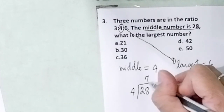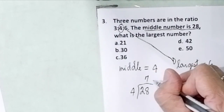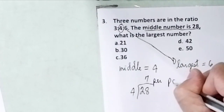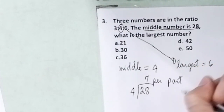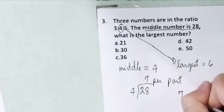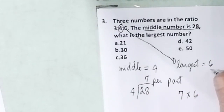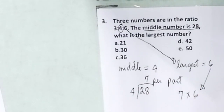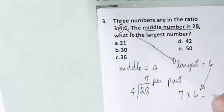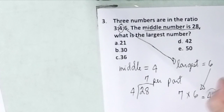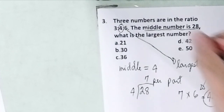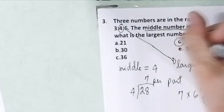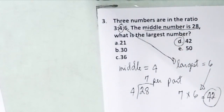Since we have 7 per part, we multiply 7 by 6. Why? The largest has six parts. So 7 times 6 gives us 42. The final answer is letter D, 42.